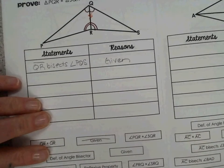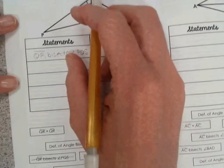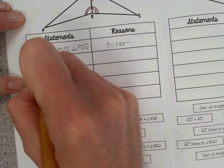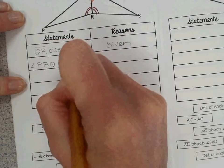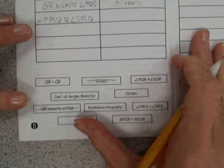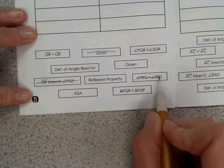Next, we'll give the other given piece of information. Angle PRQ is congruent to angle SRQ. And we have that down here. And again, it's given.